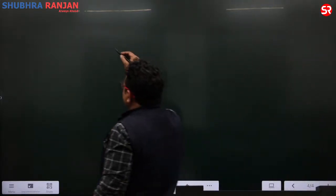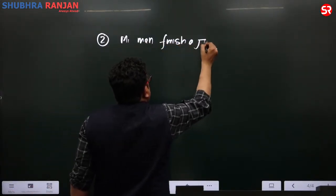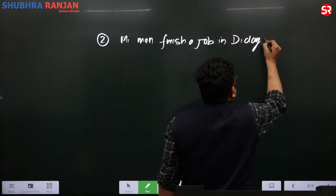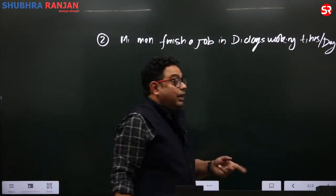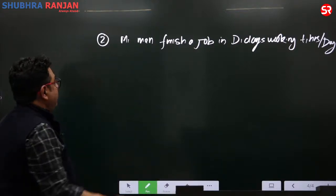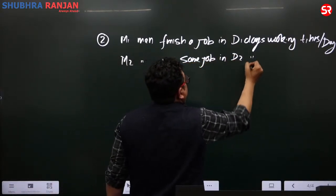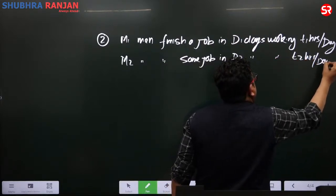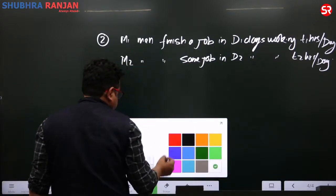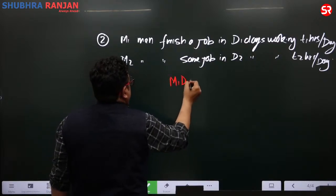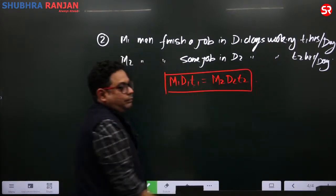Point number 2: M1 men finish a job in D1 days working T1 hours per day. Similarly M2 men finish the same job in D2 days working T2 hours per day. In this case, the formula is M1 × D1 × T1 equals M2 × D2 × T2. This is shortcut number 2.